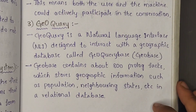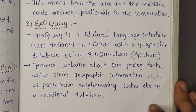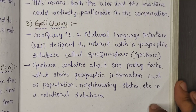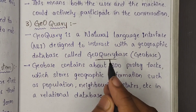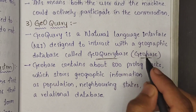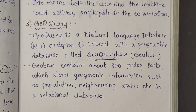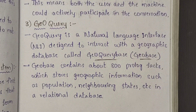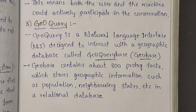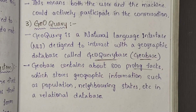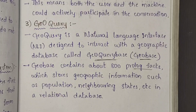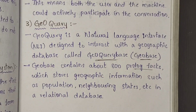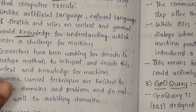Geoquery: it is also a concept in meaning representation system. Geoquery is a natural language interface (NLI) designed to interact with a geographical database called GeoBase. It contains about 800 Prolog facts which store geographic information such as population, neighboring states, etc. in a relational database. These are the three approaches for meaning representation system.